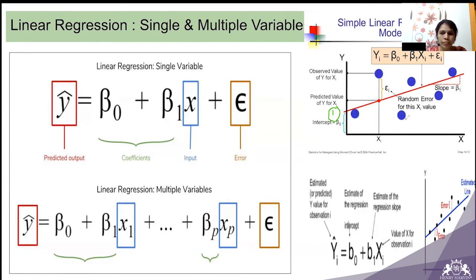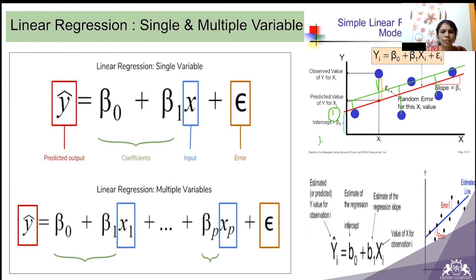Here there is an error, and here also there is an error — this distance is called the error. This is how the error is calculated for one line. Now let's draw another line. For this second line there will also be errors at various data points — some points will have error and others will not. So for two different lines we get different error values.